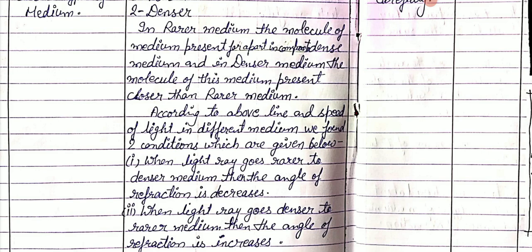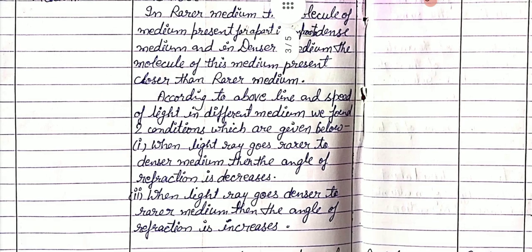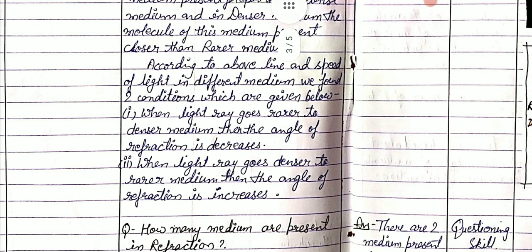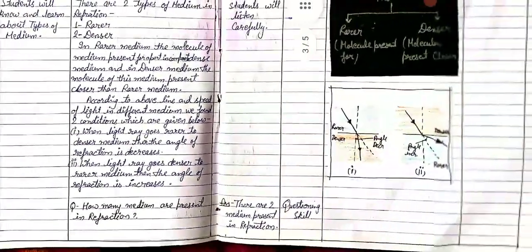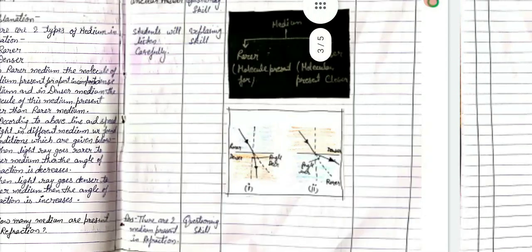In a rarer medium, the molecules of the medium are present far apart compared to a denser medium. In a denser medium, the molecules are present closer together than in a rarer medium. The speed of light is different in different mediums. When a light ray goes from rarer to denser medium, the angle of refraction decreases. When light goes from denser to rarer medium, the angle of refraction increases.